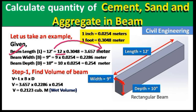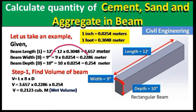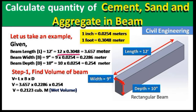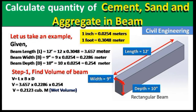Now we convert all dimensions to meters. Length is 12 feet; the conversion unit is 1 foot = 0.3048 m, giving 3.657 m. Width is 9 inches; 1 inch = 0.0254 m, giving 0.2286 m. Depth is 10 inches, converted similarly to 0.254 m.